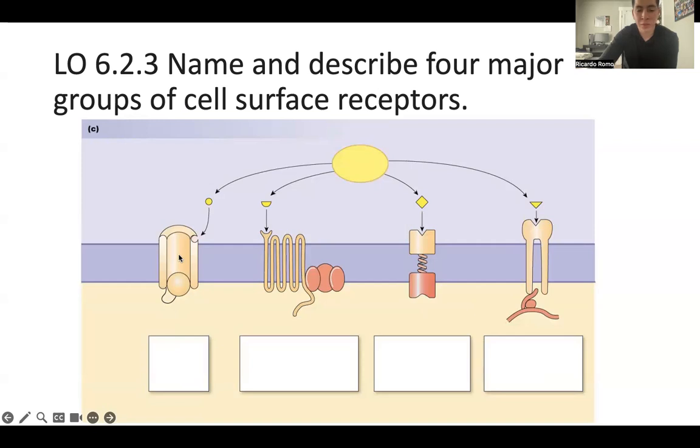So an example of channels that we talked about was the sodium channel, sodium potassium channel. An example with the G protein one is that we have our ligand binding, it activates our G protein. It then activates adenylate cyclase, which turns ATP to cyclic AMP. That's going to activate protein kinase A. And then protein kinase A is going to phosphorylate proteins, so we can have our cell response.